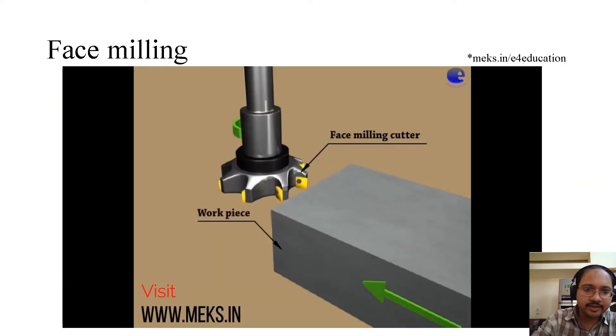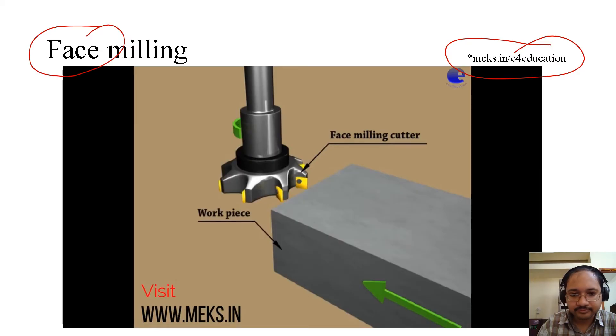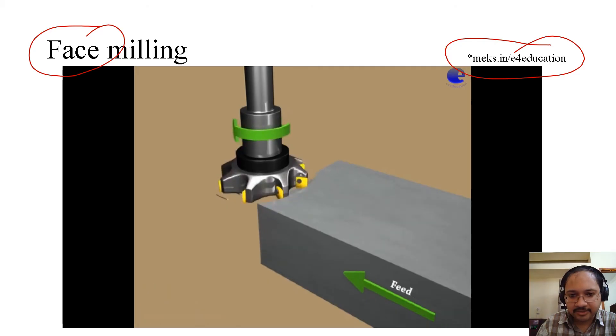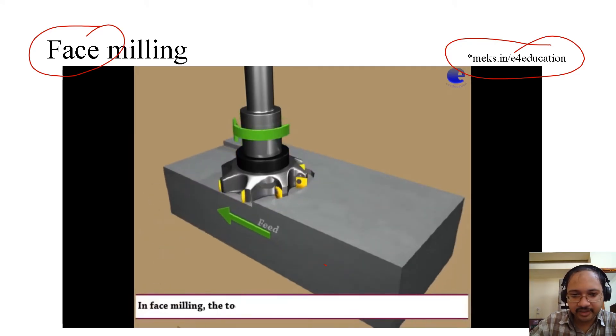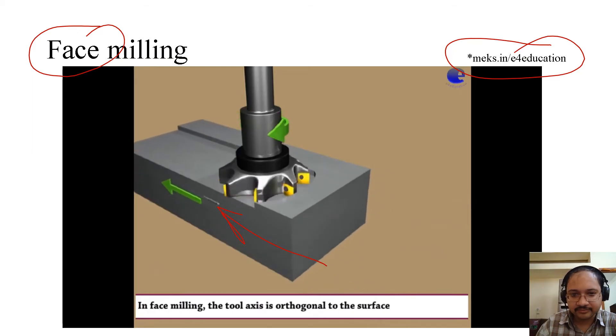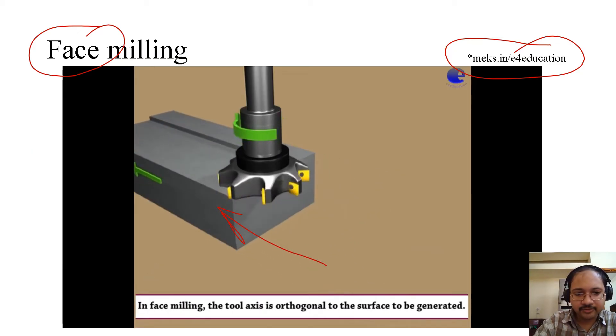Next, we'll look into face milling. Initially we have seen slab milling, now it is face milling. Obviously it will mill the face of the workpiece. Let's look into the video again, this is the same from mex.in. As we can see, the cutter is rotating and gradually the workpiece is given the feed in this direction. Again, if we try to understand it from this view, that's the front view. In face milling, the tool axis is orthogonal to the surface to be generated.